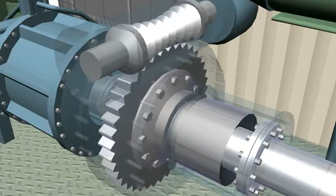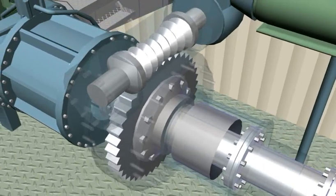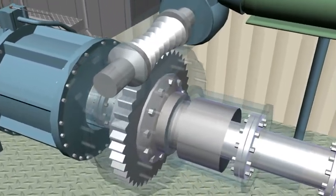The starting disconnect clutch disengages the turning gear when the rotor speed exceeds approximately 2.5 RPM.